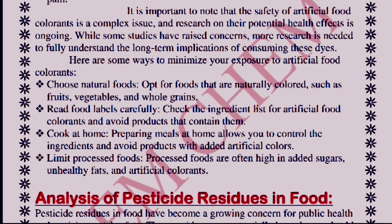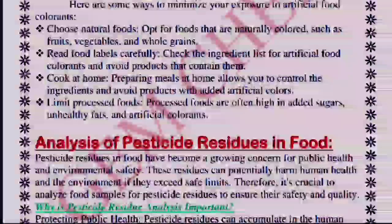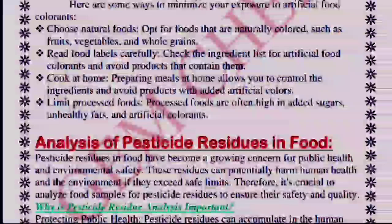We can minimize exposure to artificial food colorants by choosing natural foods — opting for naturally colored foods like fruits, vegetables, and whole grains. We should read food labels carefully to understand what ingredients are present, and we should cook at home and limit processed food consumption.